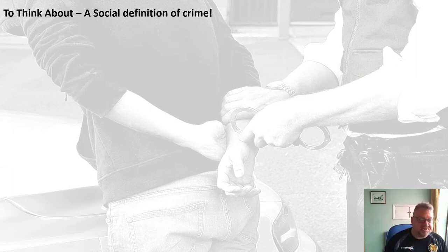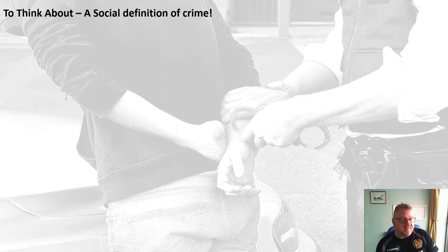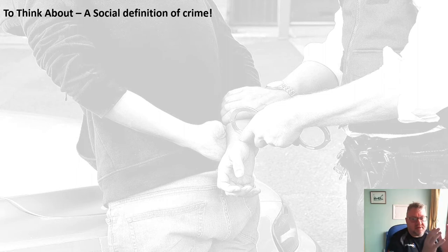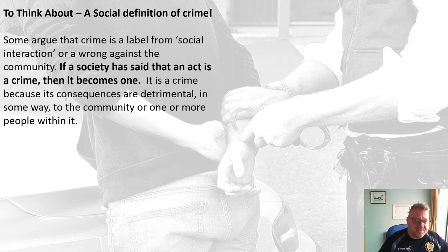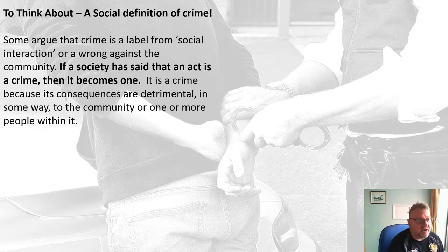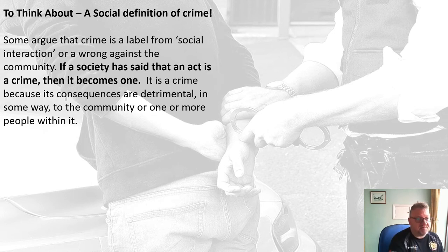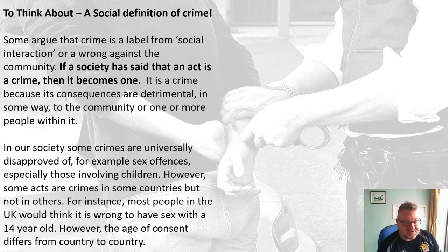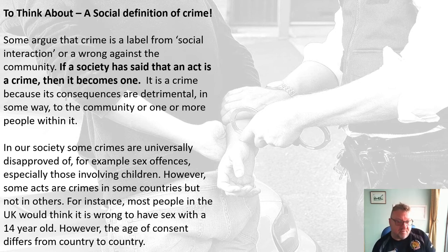Another thing to consider is whether crime is an absolute thing or merely relative — is it just defined socially and does it differ? Some people argue that crime is just a social label, an interaction, a wrong against the community. It's basically saying if society says an act is a crime, then it becomes one. If its consequences are detrimental in some way to the community, the community decides it's a crime. What this means is that in some societies certain things will not be seen as criminal, whereas in others they will.